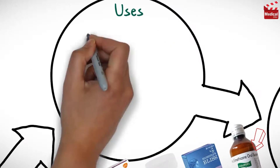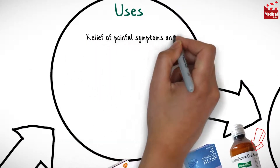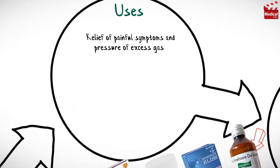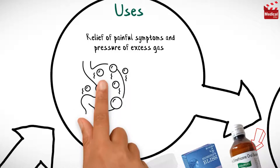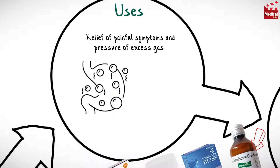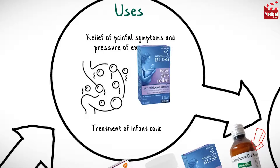Simethicone is used in the relief of painful symptoms and pressure of excess gas in the digestive tract, and it is also used in the treatment of infant colic.